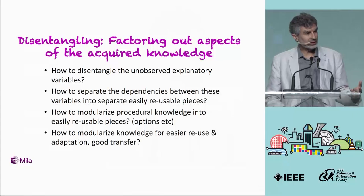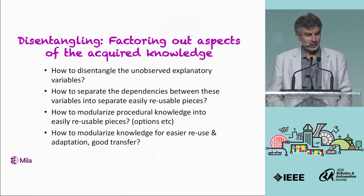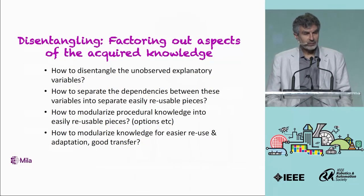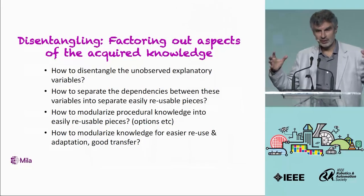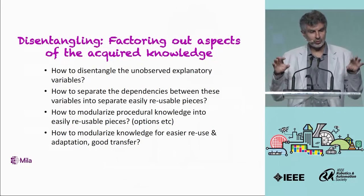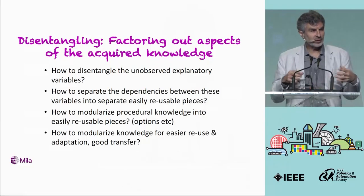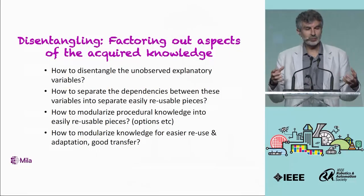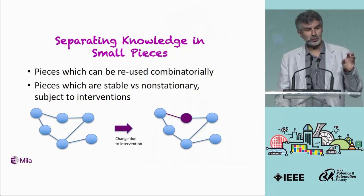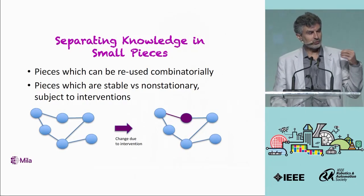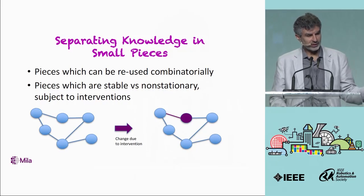Disentangling remains a very important open subject in machine learning. How do we transform raw data like images and sensor data into a space where these variables are identified, even though we don't know ahead of time what they should be? This connects to how a learner builds a model of the world and decomposes its knowledge into the right pieces so that those pieces are easy to reuse in different contexts — a question of modularization, whether it's decomposing policies or relationships between random variables. Today I'll tell you about new assumptions to deal with transfer to new distributions, modularization, and discovering new variables.